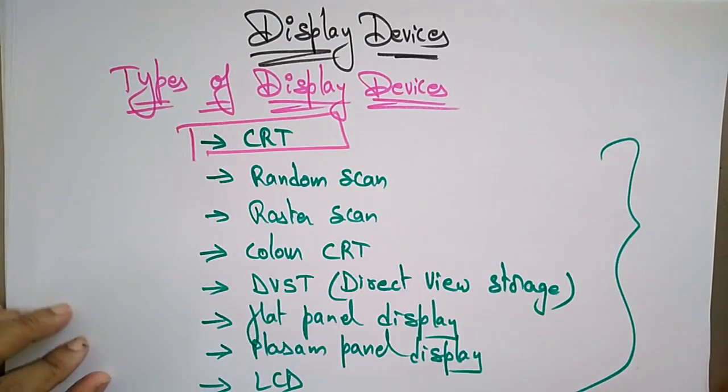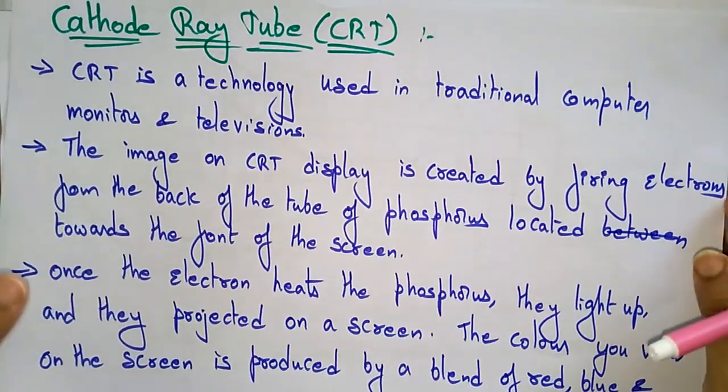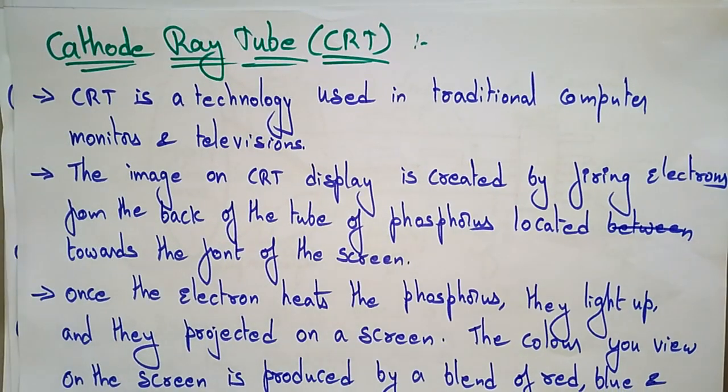The first display device we'll look at is the CRT — cathode ray tube. This is one of the most important concepts, because if you understand CRT, the other devices will be easier to understand. CRT is a technology used in traditional computer monitors and televisions. In previous days, all the screens we used were CRT screens, before LEDs, LCDs, and HD displays came along.